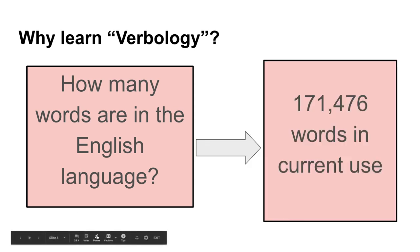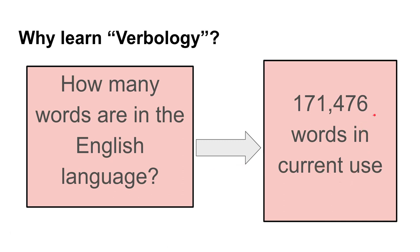There are actually over 170,000 words in current use in the English language, and more words are being added to the English dictionary on a yearly basis. Now granted, most of those words are like 'shoe,' 'school,' 'a,' 'this,' 'the' — but what if you run into a word like this?